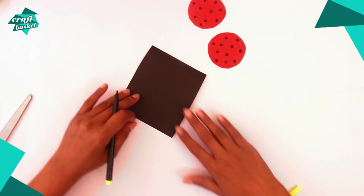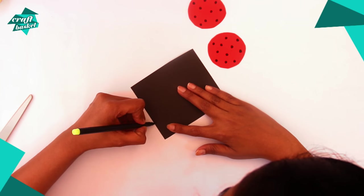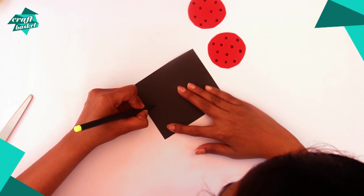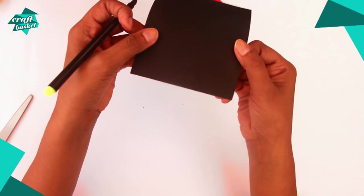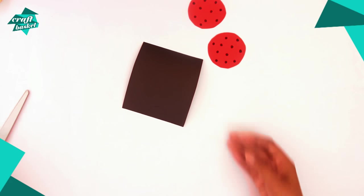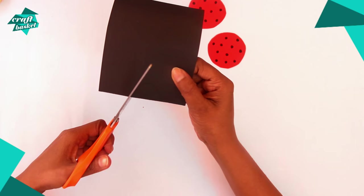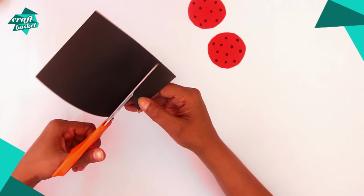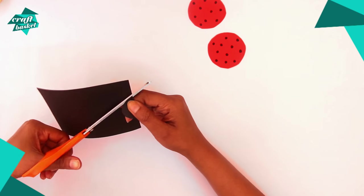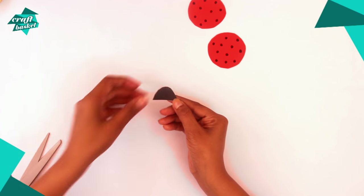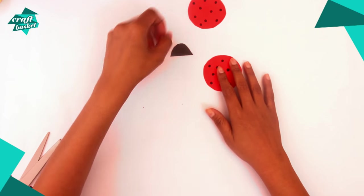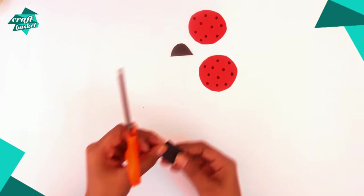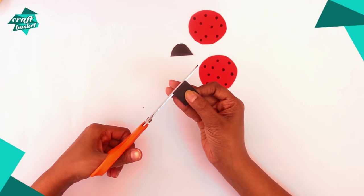Now take your brown paper and draw a half circle in the corner and cut it out. Also cut out two thin pieces of paper.